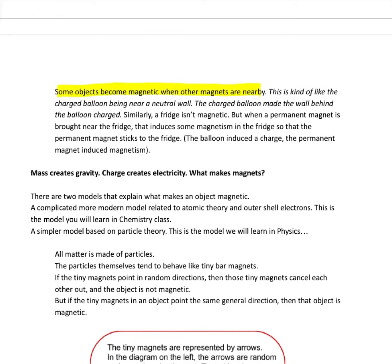Some objects are magnetic when other objects are nearby. Just like the example of that balloon by the wall. The charge balloon went near a neutral wall. That made the wall charged and then the balloon stuck to the wall. Similarly, a common material like your fridge, or if we were in school, the whiteboard.